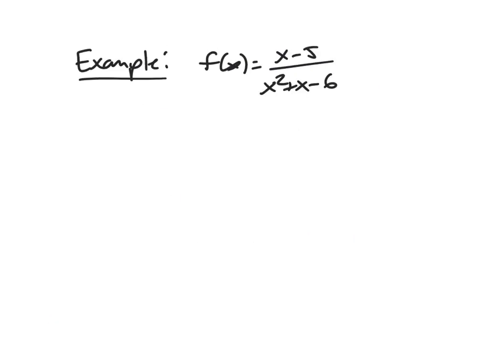So we're going to look at this same example again, so x minus 5 over x squared plus x minus 6. And I'm going to give you the general strategy for how we're going to find horizontal asymptotes for these rational functions in general.